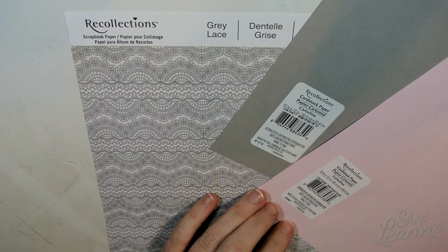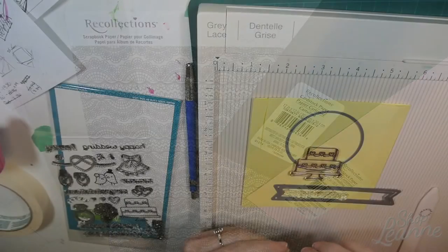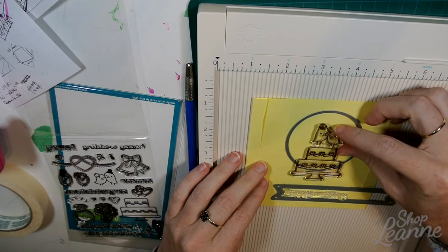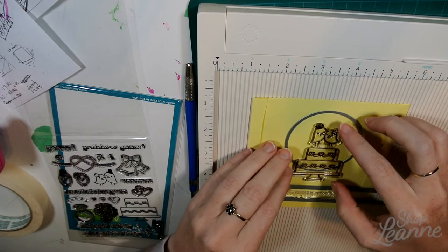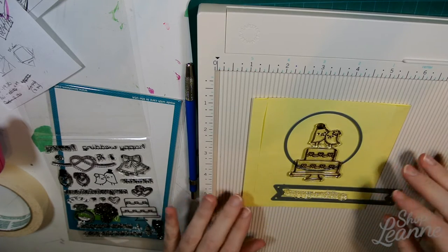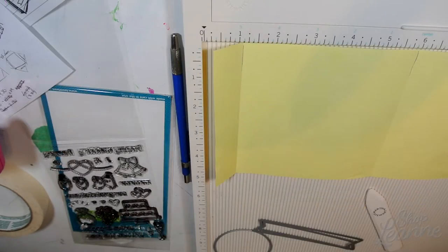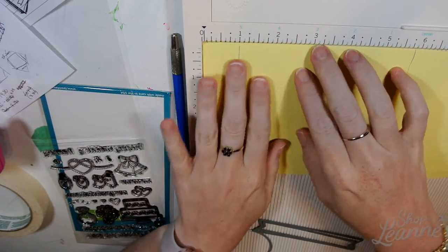I'm going to cut these up to be the gatefold card. I did a test with my yellow paper there, and I'm just laying out my elements to see positioning and size. The final size of this card will be five inches squared.